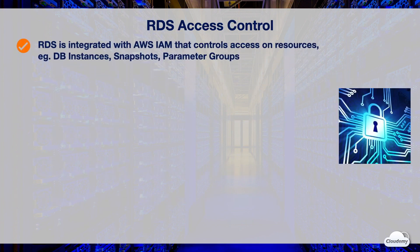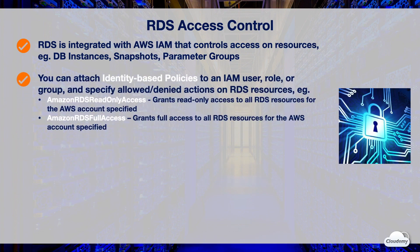RDS is integrated with AWS IAM. It provides you the ability for your IAM users and groups so that they can control actions on specific resources, such as DB instances, snapshots, parameter groups, and options groups. You can attach identity-based policies to an IAM user, role, or group, and specify allowed or denied actions on RDS resources.